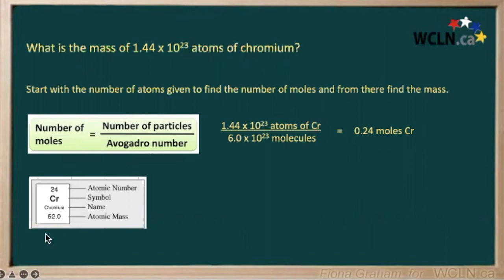Now let's go to the periodic table, and we can see that chromium has an atomic mass of 52. That means 52 grams per mole. We're going to use this conversion factor, multiply it by our number of moles, and we will get our number of grams.